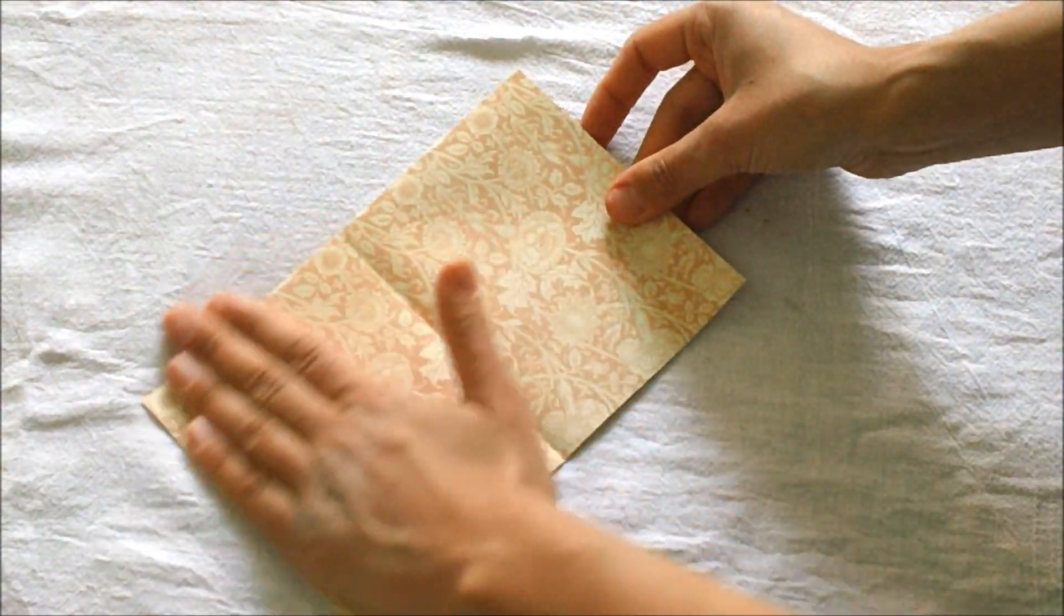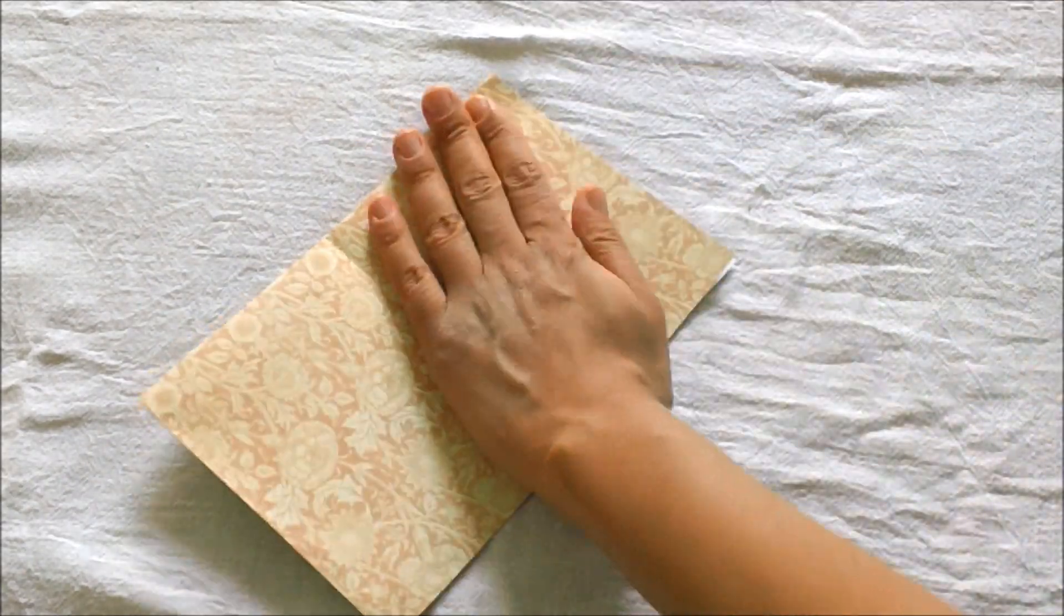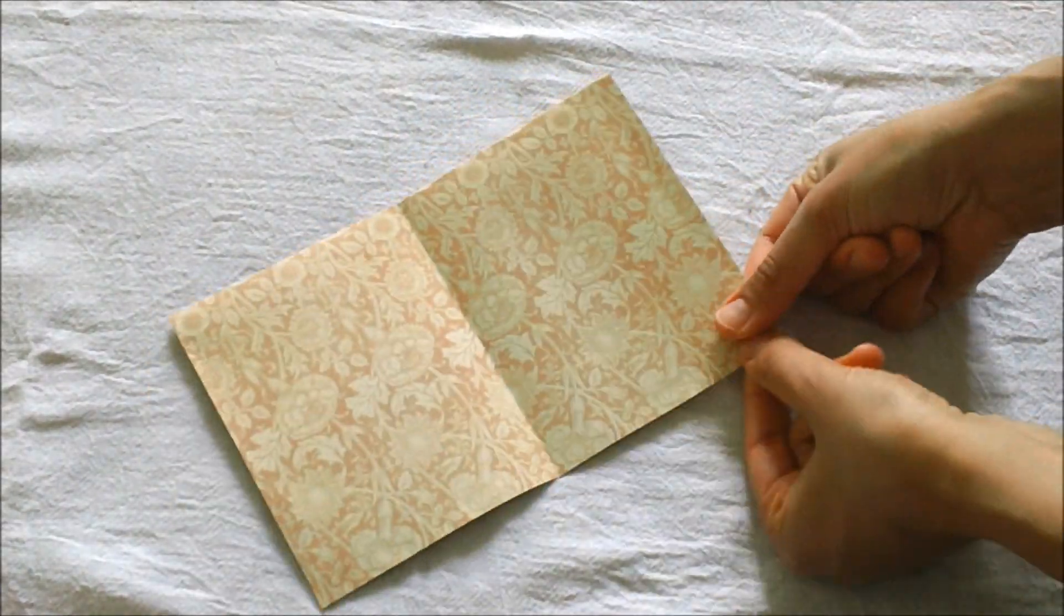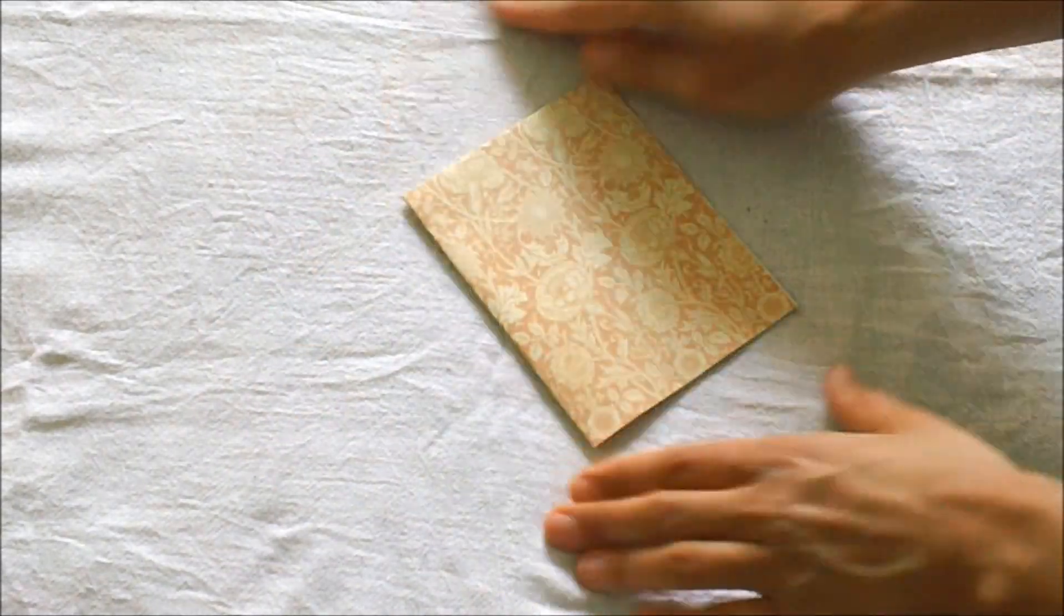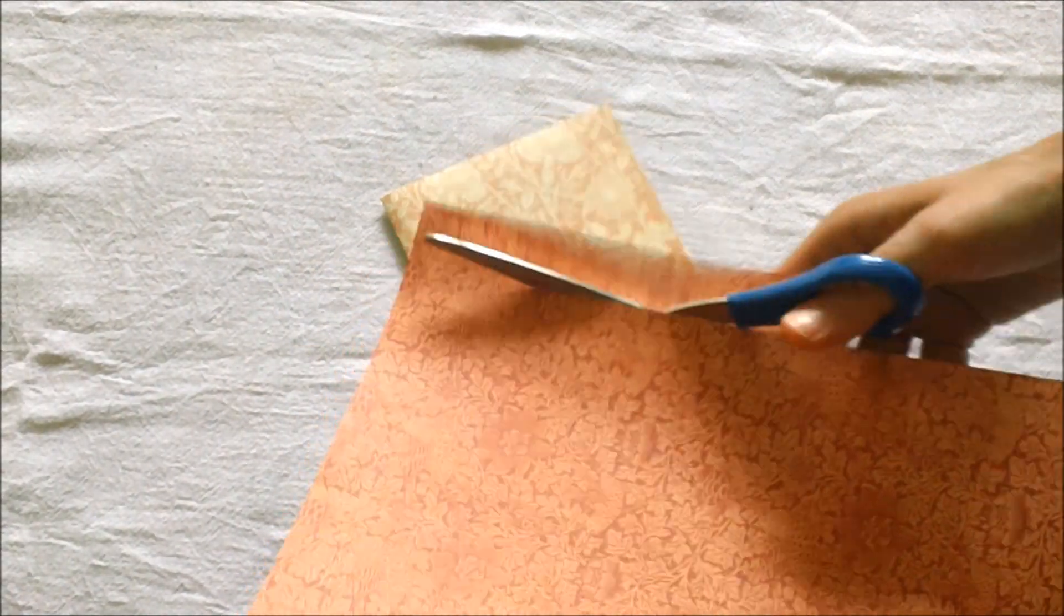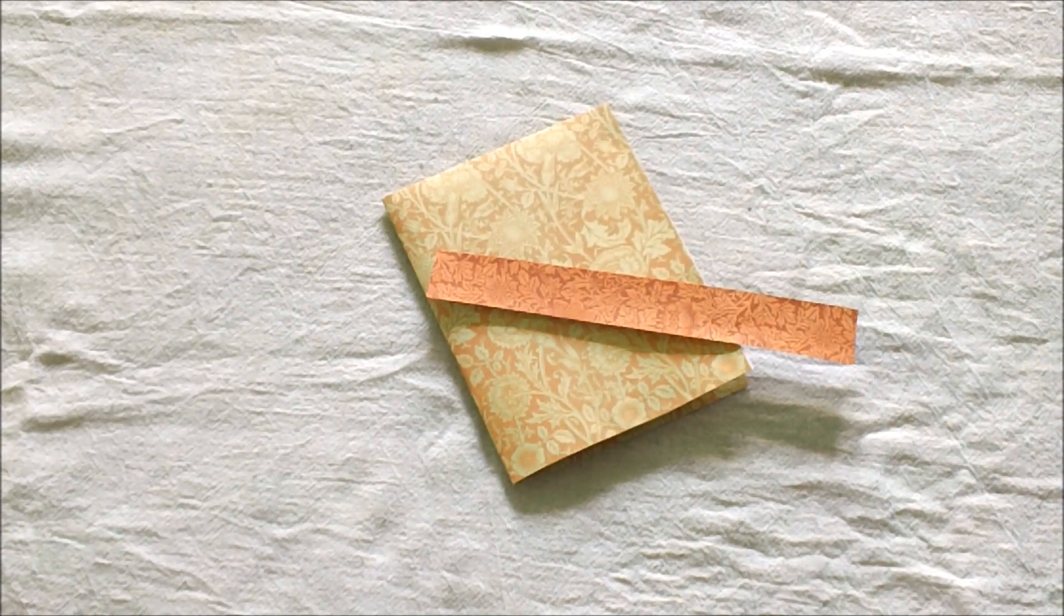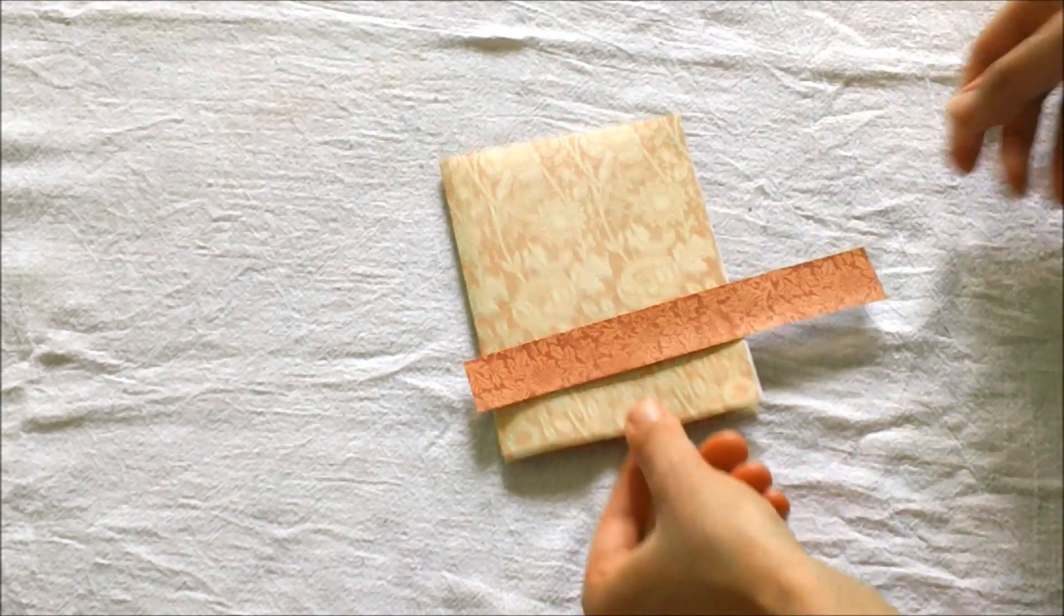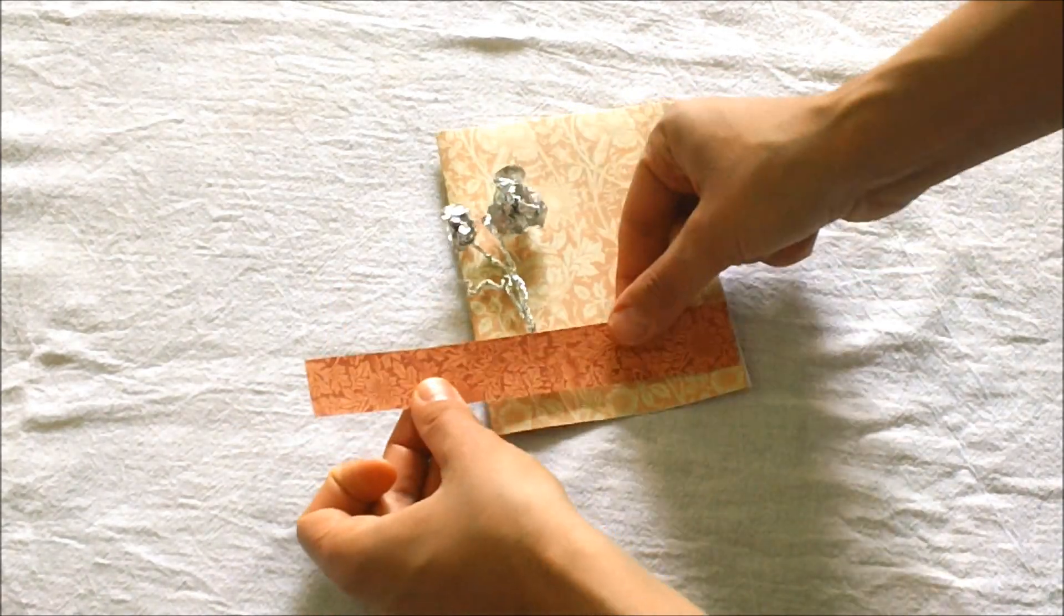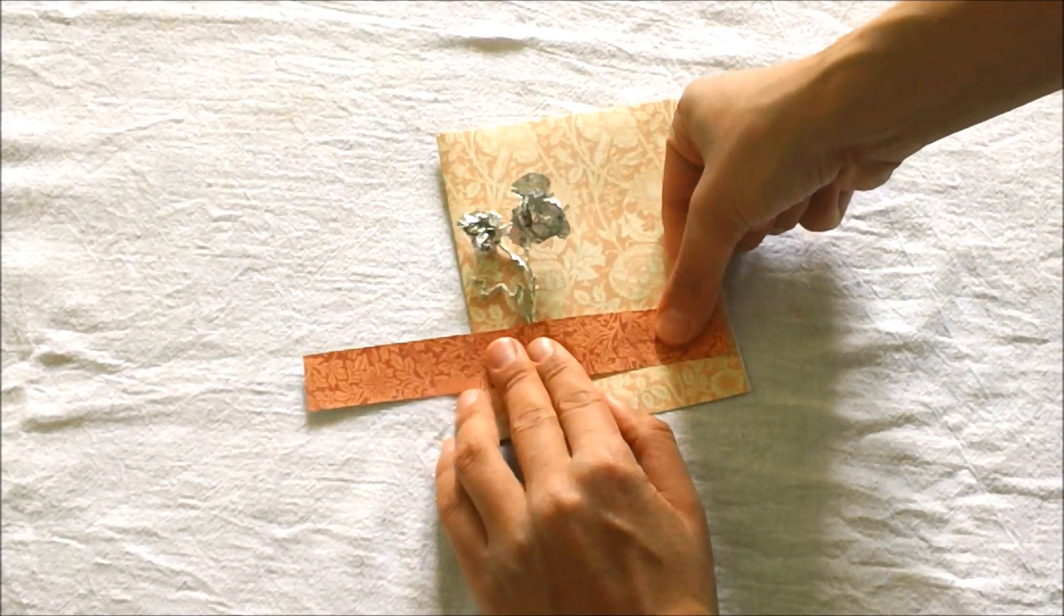And glue the open edges together, arrange the flowers on the front of the card and cut a strip of paper with a different pattern this time and glue it on top of the flowers to hold them in place.